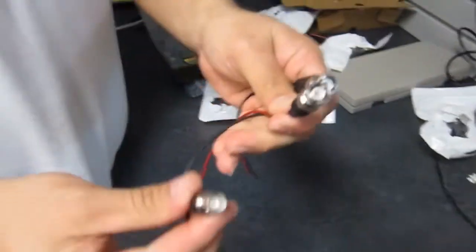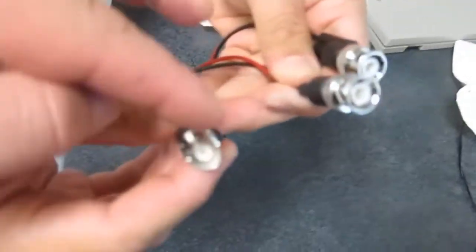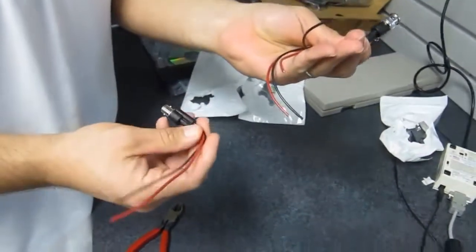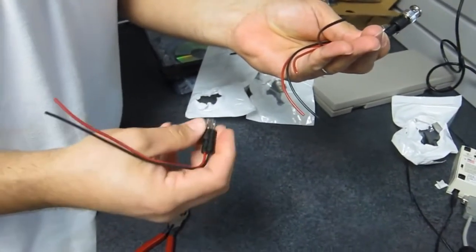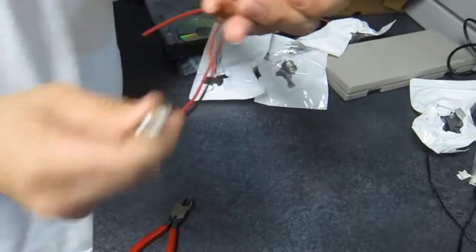These are the three BNC cables needed to make it - two females and one male. All of them have positive and negative wires. The negative wire is attached to the shell, and the positive wire is attached to the pin.